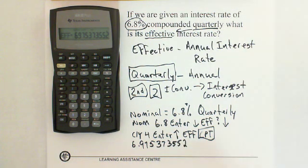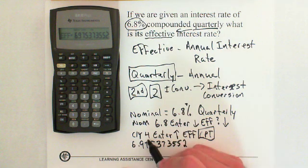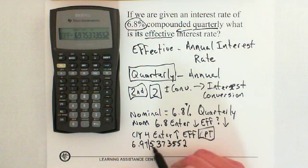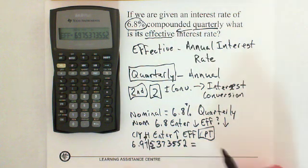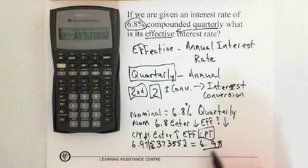Depending on how many decimal places the answer wants, I'm just going to round it off to two decimal places here. Since we have a 5 as our third decimal place, that causes us to round the 7 up, making it 6.98 as our final answer.